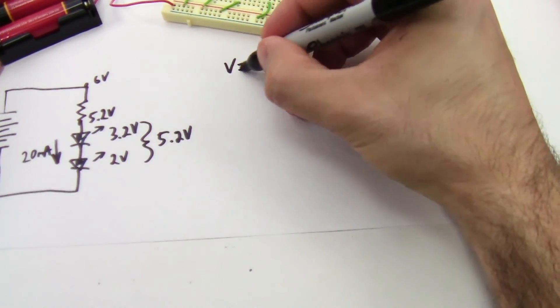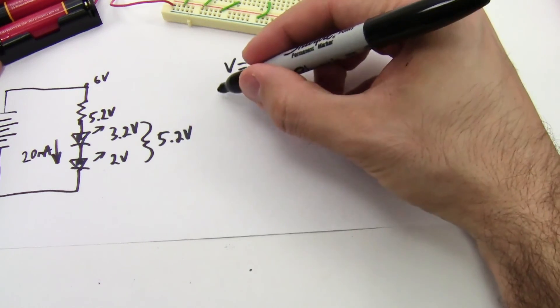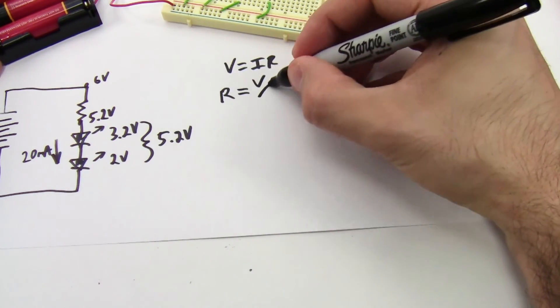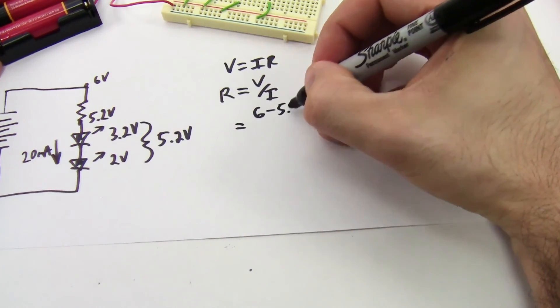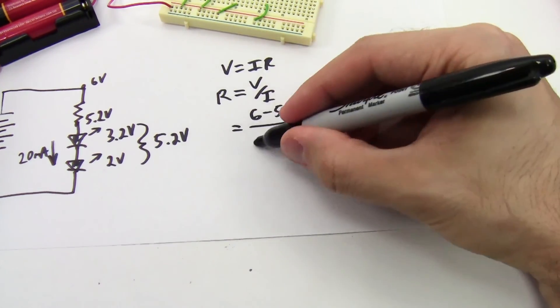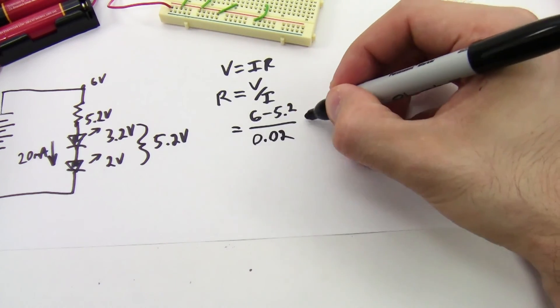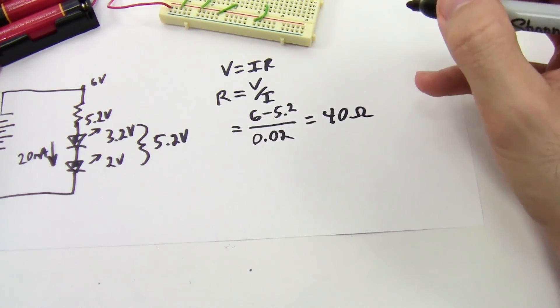So yet again, I have V equals IR, which I rearranged to solve for the resistance. R equals V over I equals 6 volts minus 5.2 volts divided by 20 milliamps. And in this case, that's going to give me 40 ohms.